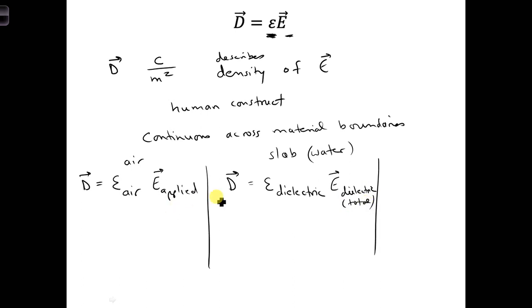So using these two equations, come up with a ratio of how much the electric field is reduced by in the material. So in other words, we're going to solve for the ratio E applied over E dielectric total. See if you can come up with the relationship for that, and also simplify it to figure out what it might represent.